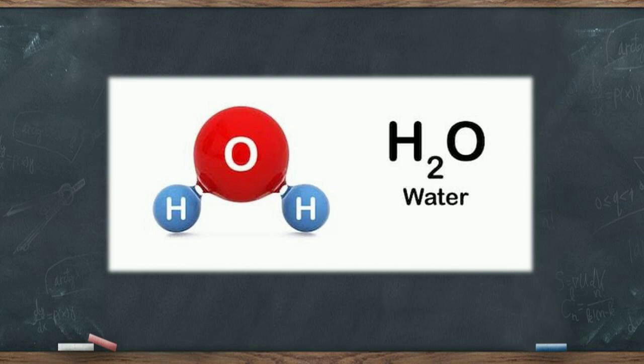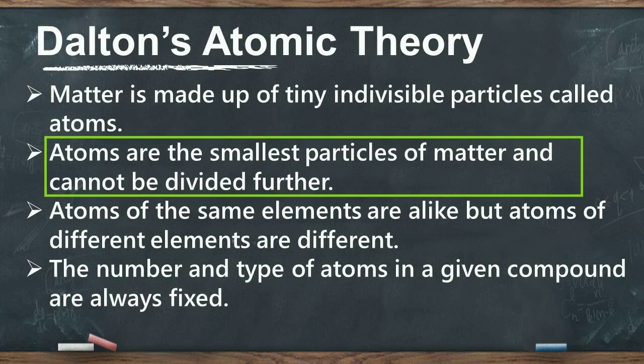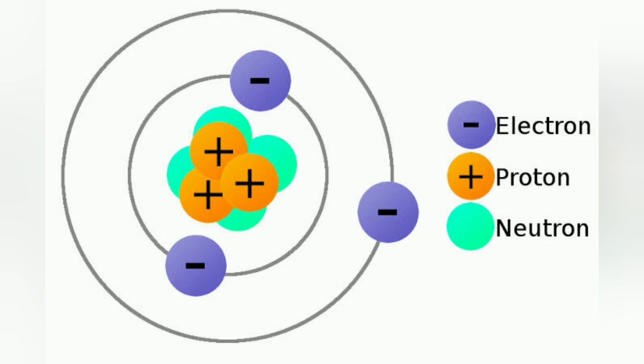One of the points of Dalton's atomic theory is that atoms are the smallest particles of matter and cannot be divided further. But later on, in late 19th and early 20th centuries, some studies and discoveries showed that atom is not the smallest particle of matter. Atoms are divisible. They are composed of still smaller particles, namely electrons, protons, and neutrons.